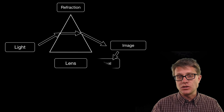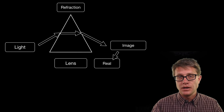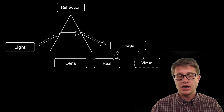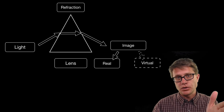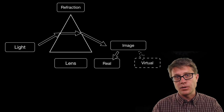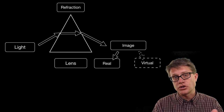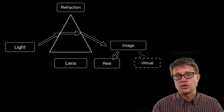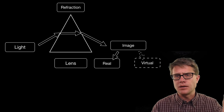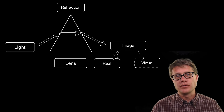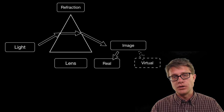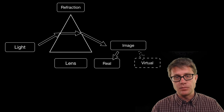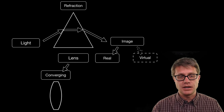Sometimes that image is real and sometimes it is a virtual image. How do you tell the difference between the two? If you put a piece of paper there, the real image will show up and a virtual image will not. When you are looking at a mirror, for example, there is a virtual image of you on the other side, but you cannot put a piece of paper there — you simply cannot get in.